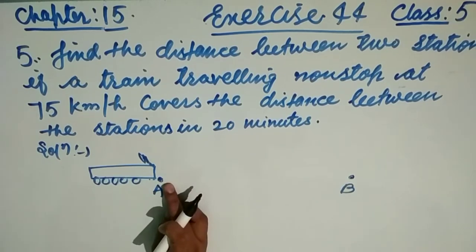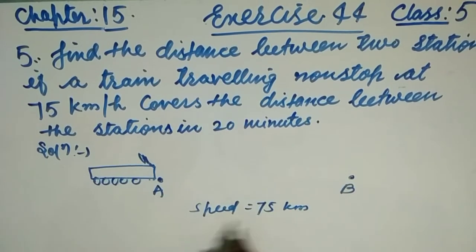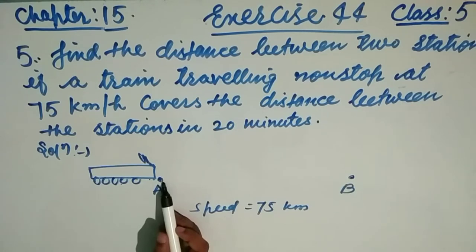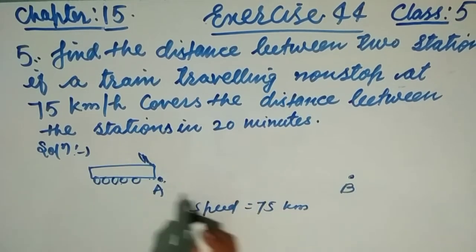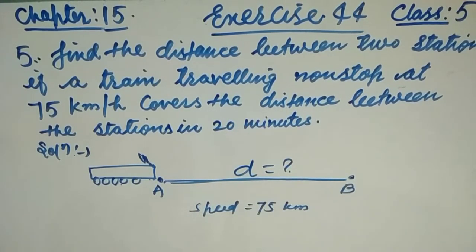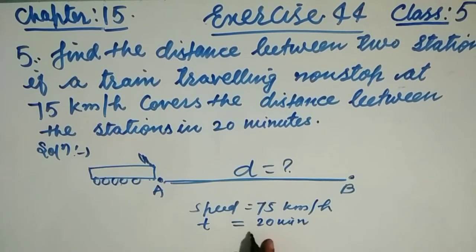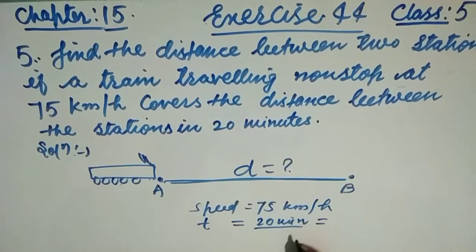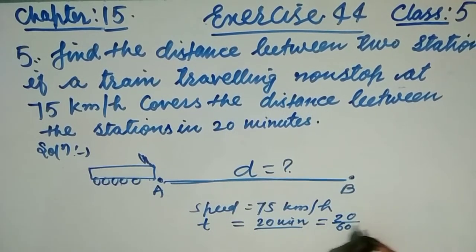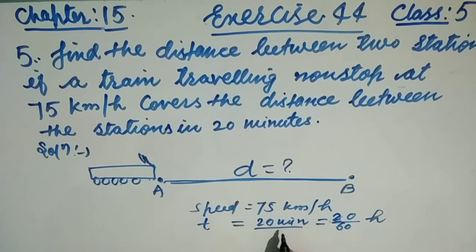The speed is 75 kilometers per hour. We have to find the distance between the stations. The speed is given, and the time is 20 minutes. First, we need to convert the time from minutes into hours, because the speed is in kilometers per hour. 20 minutes divided by 60 gives us the time in hours.